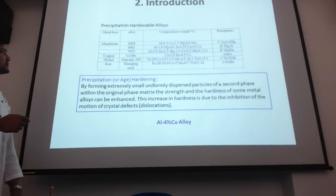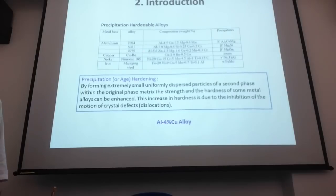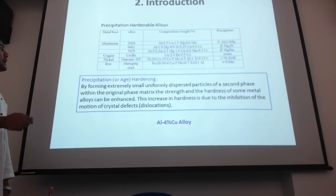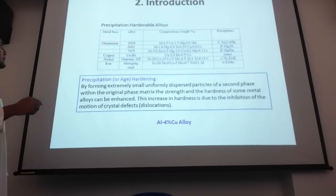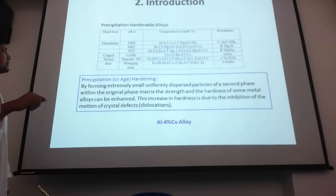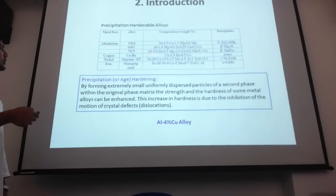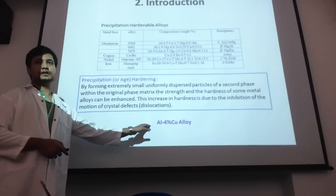It's not just aluminum alloys — there is a group of other elements as well which, when forming compounds, can also form alloys that can be hardened using this process. The most common ones are shown here. Today we will be focusing on the top one: the aluminum 2024 alloy, also known as the aluminum 4% copper alloy.